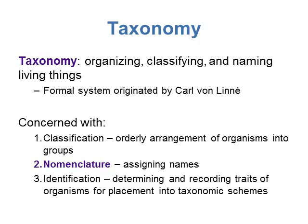Taxonomy is looking at organizing, classifying, and naming living things. The formal system originated by Carl von Linnaeus, a Swedish botanist, who came up with this organization system that we still use today. We're concerned with classifying things — arranging organisms into different groups based on how they're related to each other. The nomenclature part is where we assign scientific names or binomial names to different species. The third part is identification: we determine and record traits of an organism so that we can identify it later and place it into the appropriate taxonomic groups.